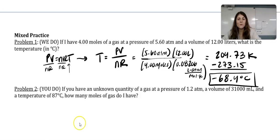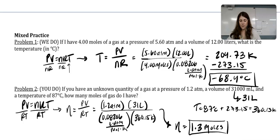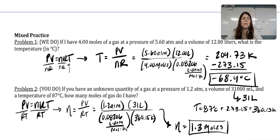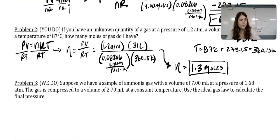For Problem 2, make sure you convert everything before plugging in. Convert milliliters to liters — you get 31 liters — and convert 87 degrees Celsius to Kelvin, getting 360.15 K. Rearrange the equation and solve. With two sig figs, you should get 1.3 moles.